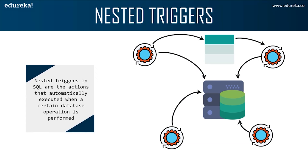You might wonder in which scenario we can use a nested trigger. Continuing from the earlier scenario, Anna sends an email for every new customer added to the company's database. Now, what if she wishes to keep track of the number of customers to whom the email was sent? Anna needs to create a nested trigger to keep track of the count along with sending an email. So that was all about the syntax of a trigger.